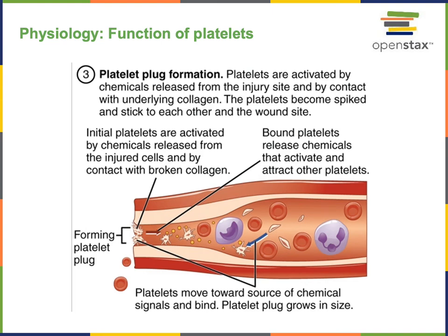Another example of physiology is thinking about the function of a type of formed element in the blood known as a platelet. What is the function of platelets? One way to answer is to say that platelets help stop bleeding — they are involved in a mechanism known as hemostasis, commonly referred to as the blood clotting process. But in physiology we will be more specific and describe the mechanism of hemostasis.